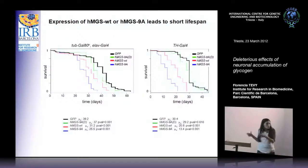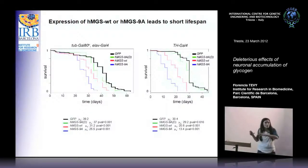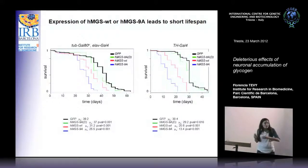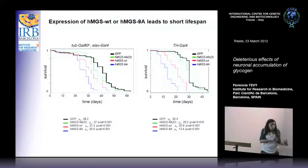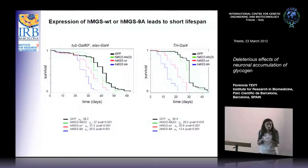All of this points to the fact that it is the glycogen dose, and not the amount of protein, that is responsible for the phenotype.